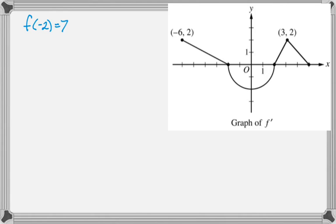What we want to do is find the values of f of negative 6 and f of 5. So I'm going to start off with an accumulation function that tells me just in general what f of x is. So f of x is going to be what we start with, which is f of negative 2, plus the integral from negative 2 to x of f prime of t dt.